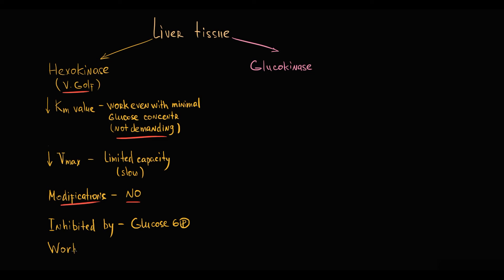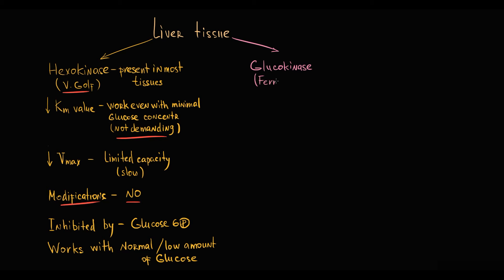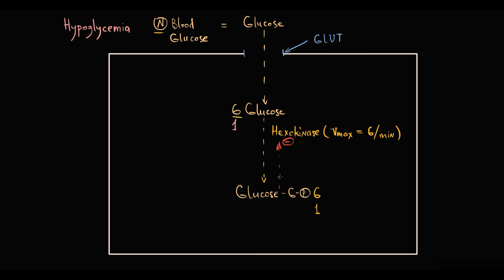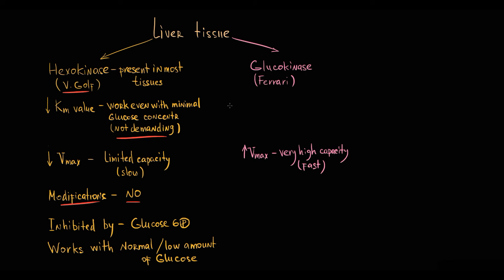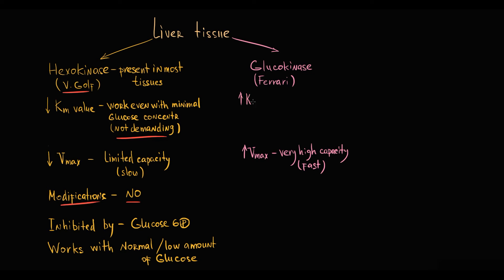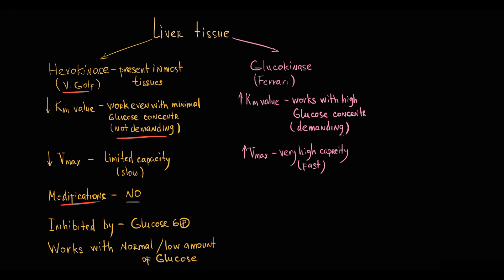Hexokinase is a budget, casual enzyme — it works great when blood glucose level is normal or low. Most tissues have exactly hexokinase because it is the inexpensive option. When we talk about glucokinase, it's a Ferrari. What makes it a Ferrari is its high Vmax: the speed limit of this enzyme is beyond the summit. If hexokinase can convert 6 glucose molecules per minute, glucokinase can convert 60 without any problem. However, glucokinase is a very demanding enzyme — it has a very high Km value, meaning it will not work well when glucose concentration inside the cell is low. Glucokinase requires a large amount of glucose molecules for its function.